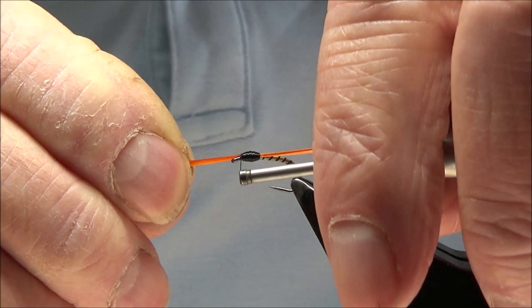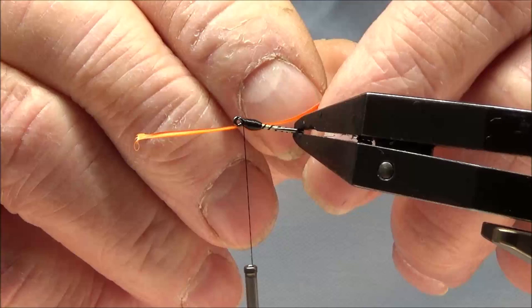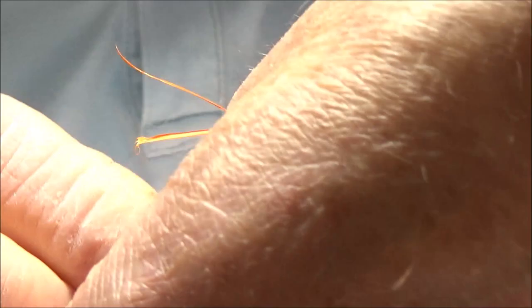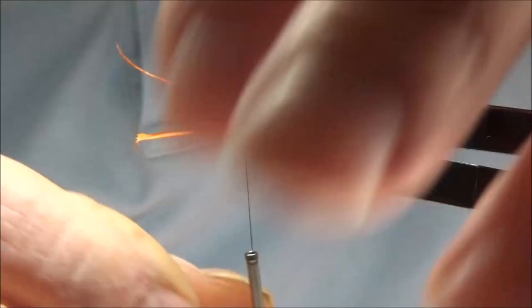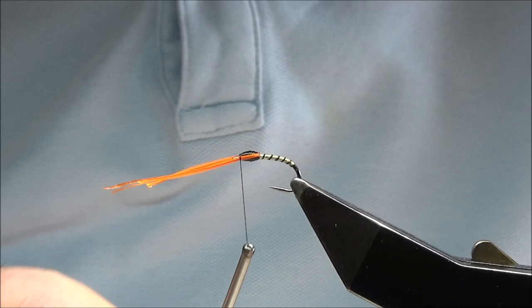Fold the biot over, catch it in, invert the vice so you can see it. Fold the other biot over. At this stage you can move them so that they're flush with the eyes on three turns. Pull the thread tight, break the biot off.